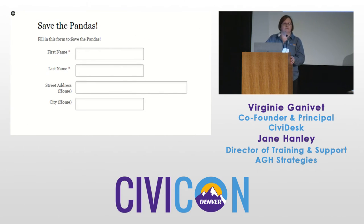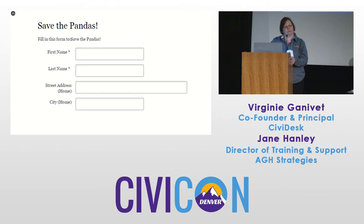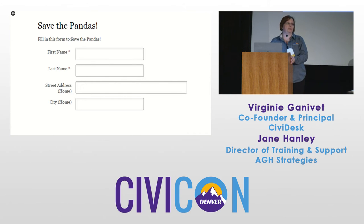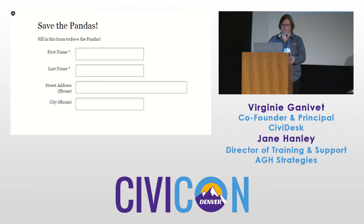For each question you will have to create a custom field and add it to the Activity Profile. One important note: this cannot be an anonymous online survey because you have to fill out at least the email address. Everything in CiviCRM is related to the email address — that's the minimum piece of data you need for each contact.